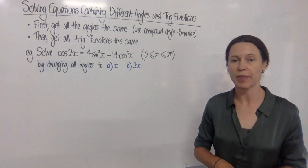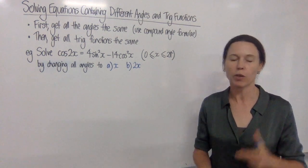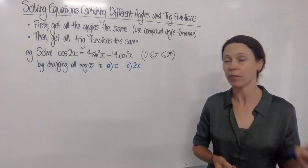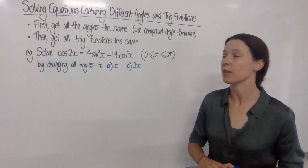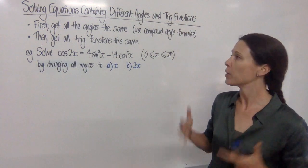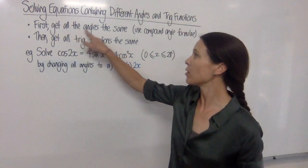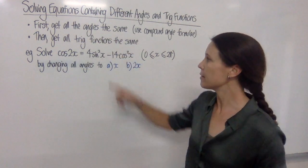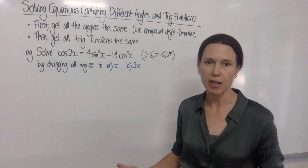We've just seen how to solve trig equations when they don't contain the same angle or the same trig function. Let's now have a look at some tricky ones that don't contain the same angle or the same trig function. We need to change both. My tip is to first get all the angles the same, then get all the trig functions the same after that.